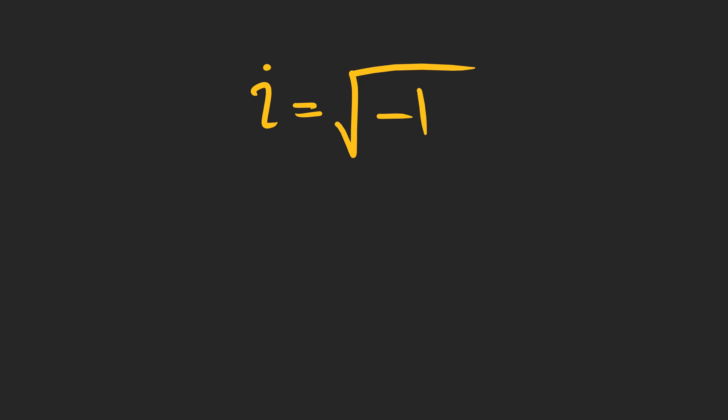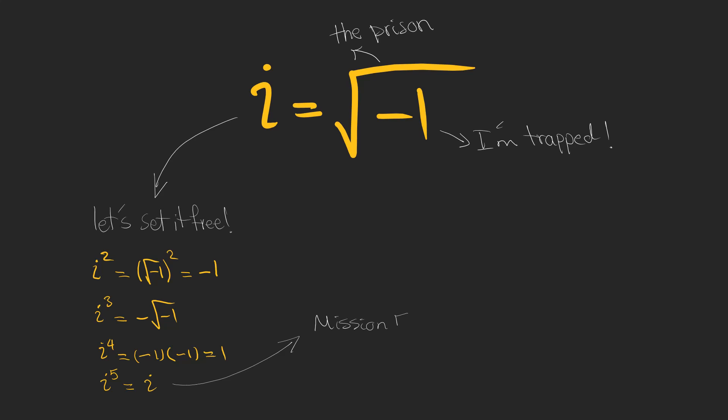Now here's where it gets interesting. Whenever I see a square root, I can't help but feel like the number inside is somehow trapped, like it's in some sort of mathematical prison and I want to set it free. So what do I do? I start using powers. I raise i to the power of two, then three, then four, and I go on. And after four times, guess what? I end up back at i again. It's like a full circle, coming back to the same value.